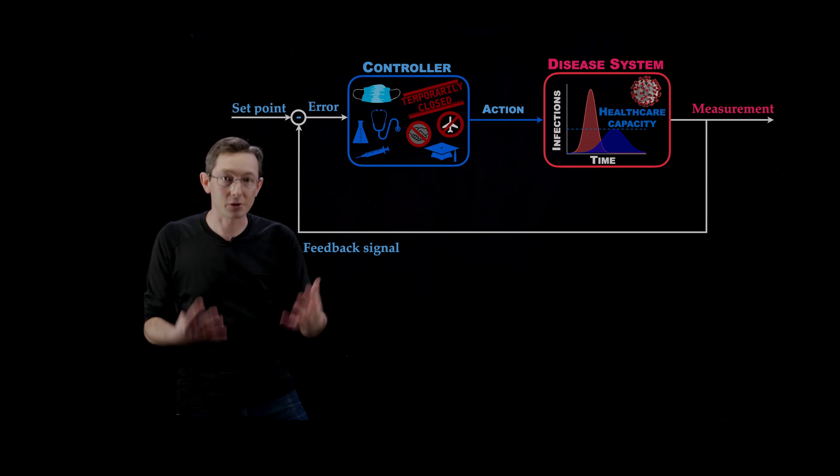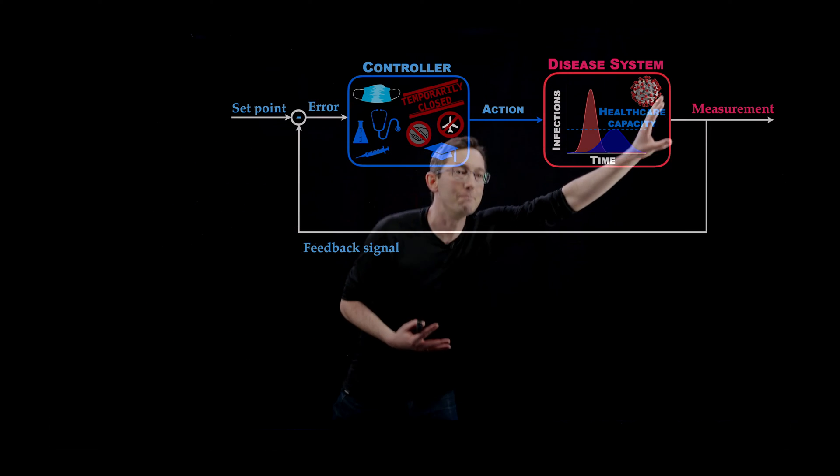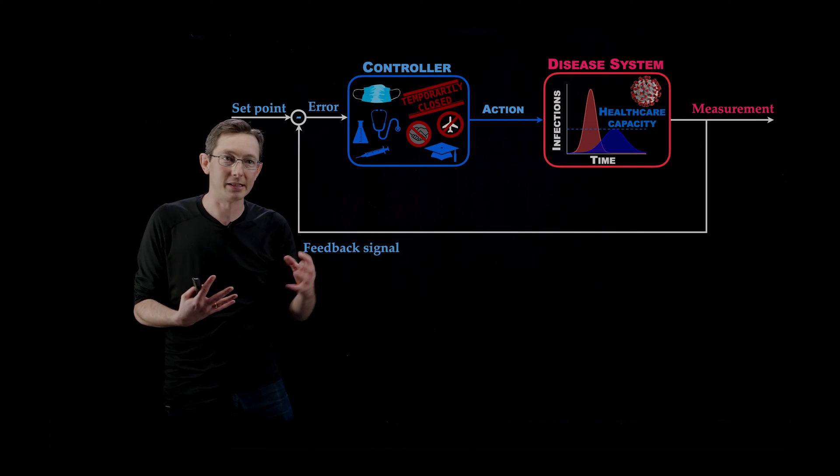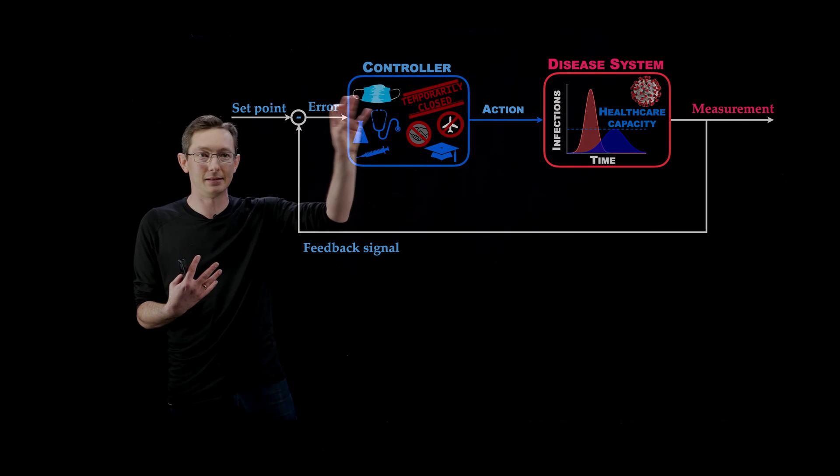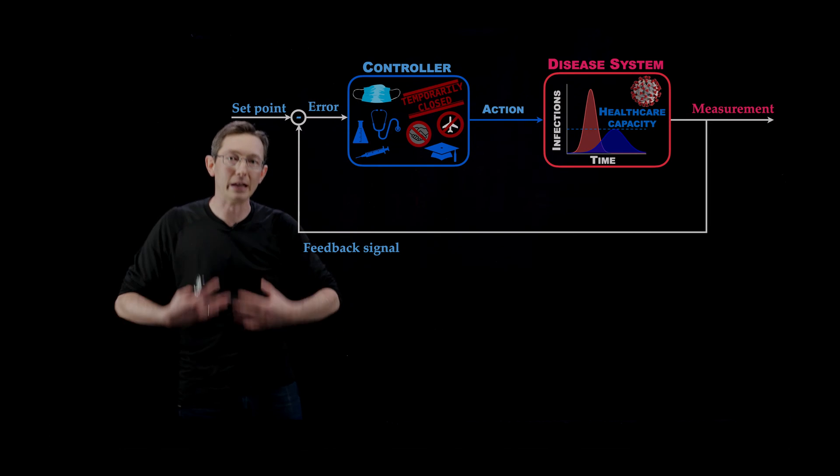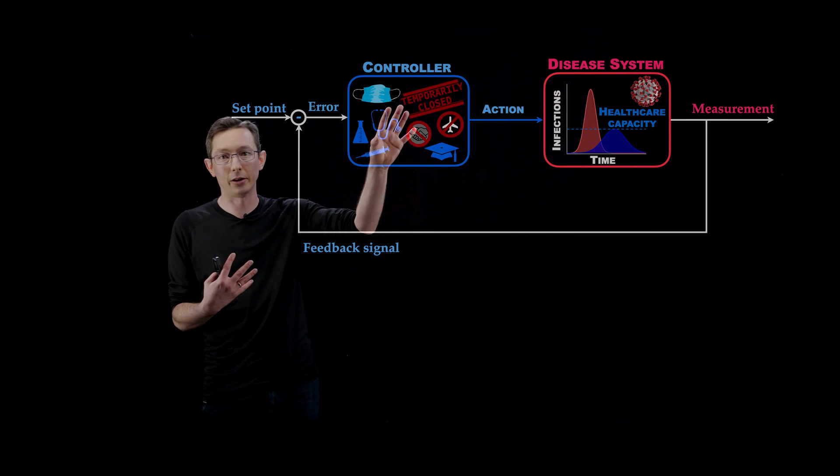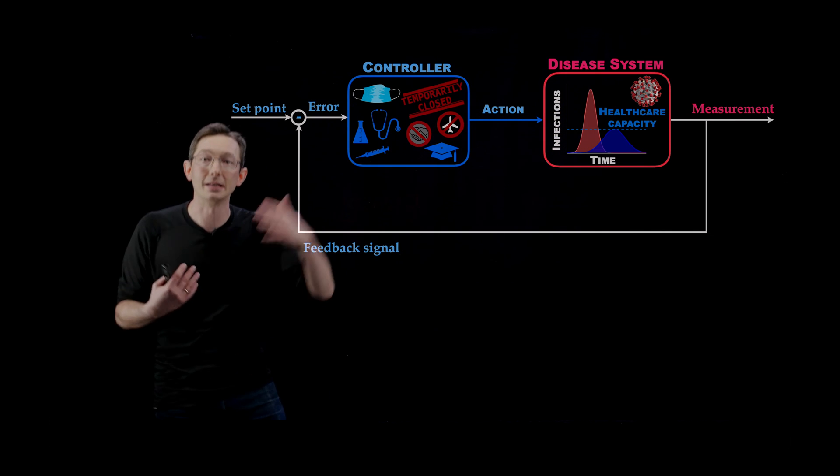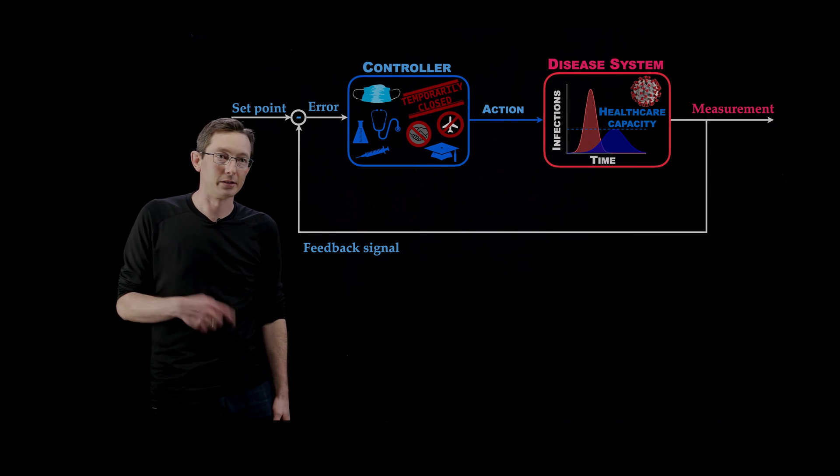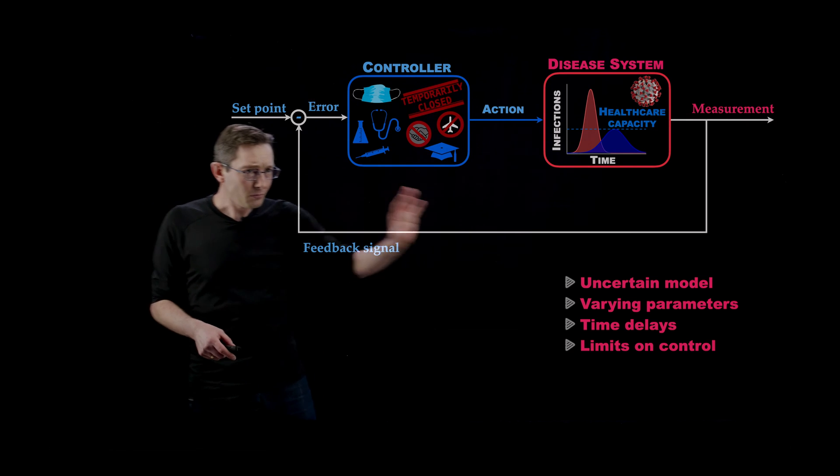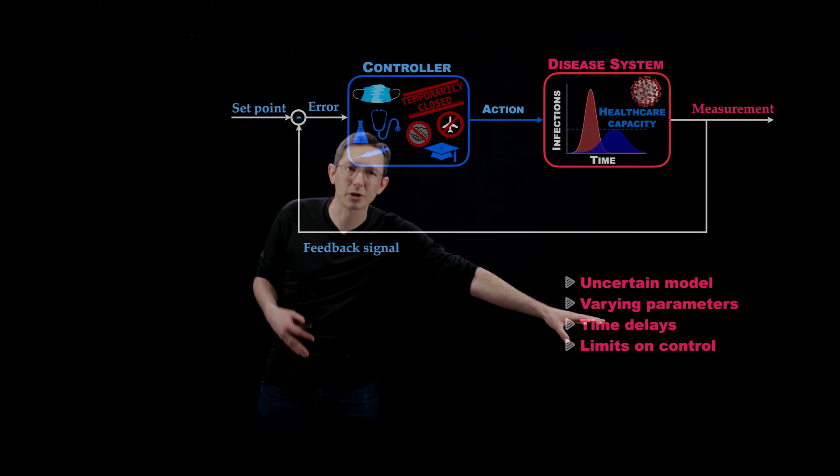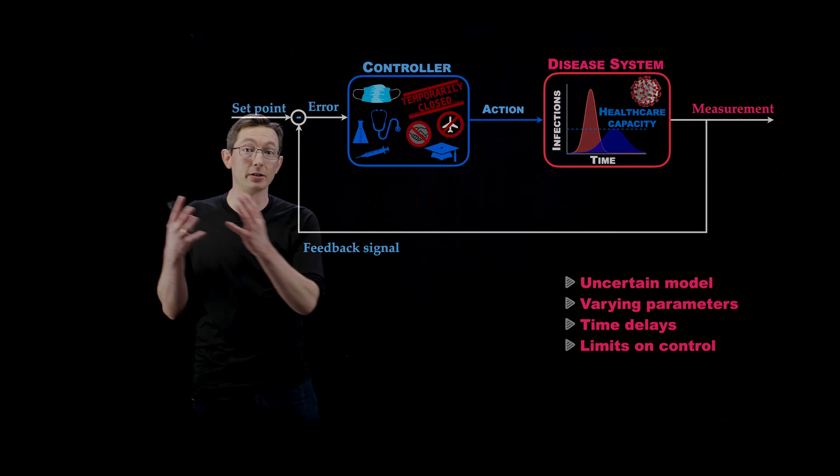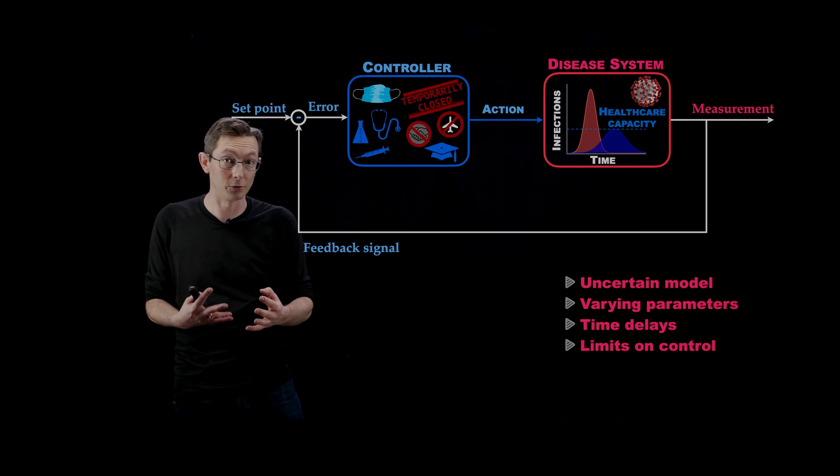I've stressed many times the importance of measuring aspects of the system, really measuring our system so that we can get this feedback signal so that we can get robust performance out of our controller. We also need good models of the system so that we can predict what's going to happen in our system. We've talked a lot about the texture and the challenges of what make this both interesting but also really hard from a modeling and control standpoint.